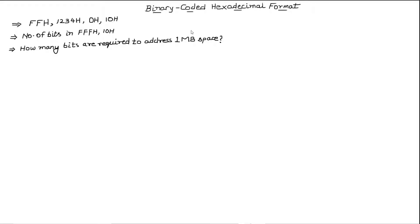Previously, we have studied about segment registers, multipurpose registers, and the microprocessor architecture. In this video, we are going to discuss the binary coded hexadecimal format. It is also known as DCH format, which is extensively used in microprocessor instructions. It is essential that we understand this format before proceeding to advanced concepts like memory addressing.